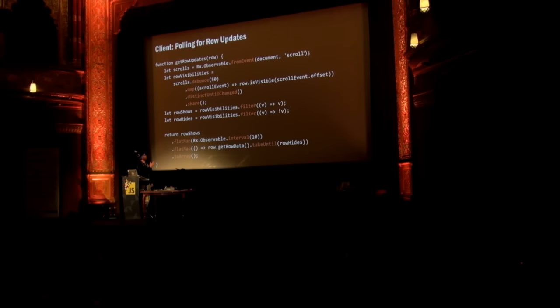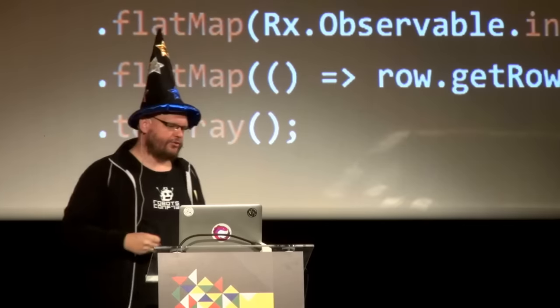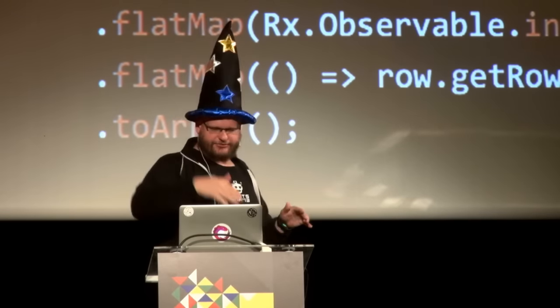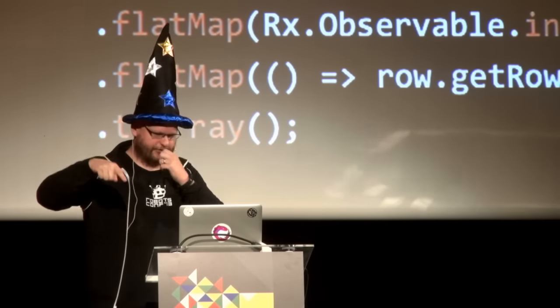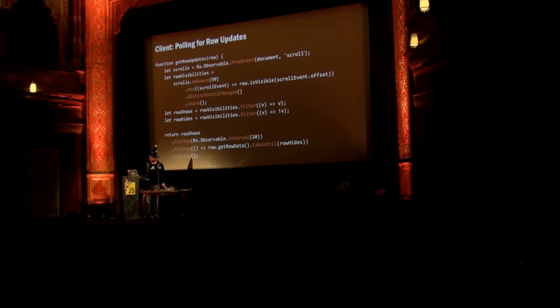We can pull for client updates. On a hardware-constrained device, you want to make sure you only keep in memory what's on the screen — nothing more, nothing less. We listen for the scroll event, then debounce it. We divide that into whether content is visible or not, and combine with an interval — constantly listening and taking that row data until it's hidden. This is Netflix code they actually use today for complex UI design.